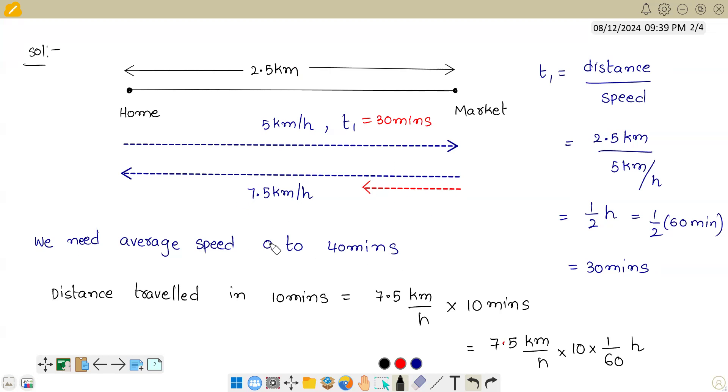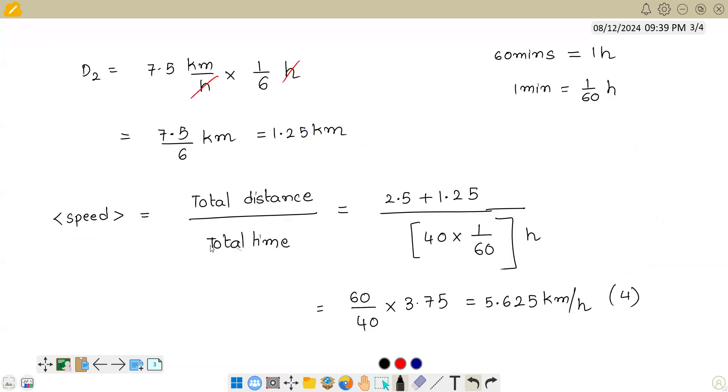So in the remaining 10 minutes, he is traveling at speed of 7.5 km per hour. I found the distance traveled. The most important thing is converting minutes into hours - that's the slightly difficult thing in this problem. Once we convert everything, we get the average speed in this way. Hope you understood how I have solved. Thank you.